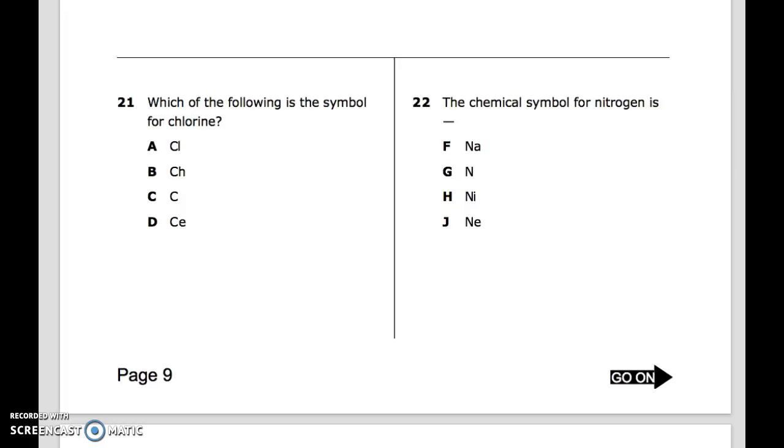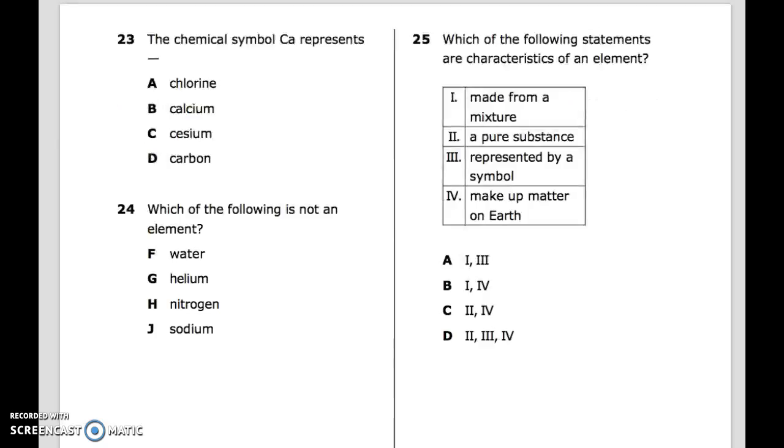21: Which of the following is the symbol for chlorine? 22: The chemical symbol for nitrogen is? 23: The chemical symbol CA represents: A. Chlorine. B. Calcium. C. Cesium. D. Carbon.